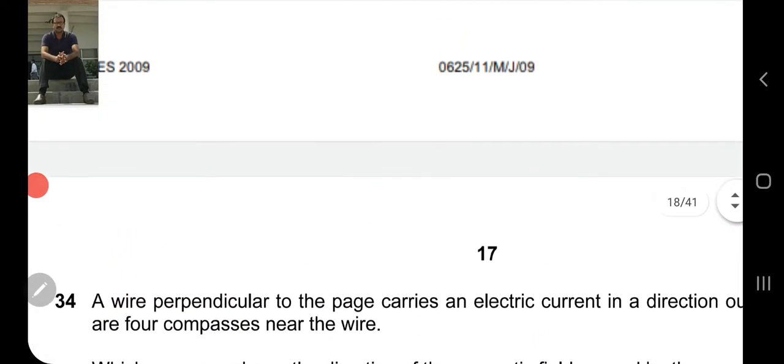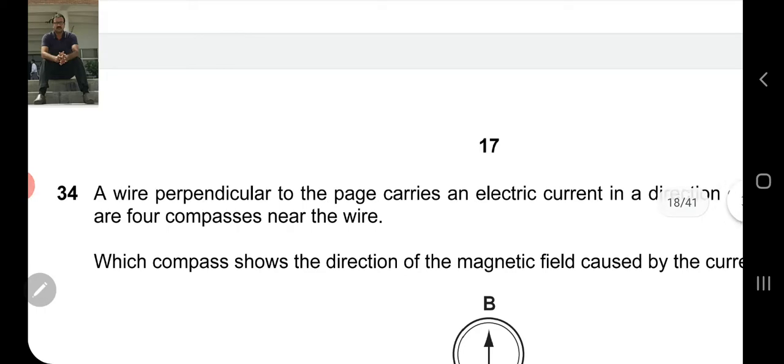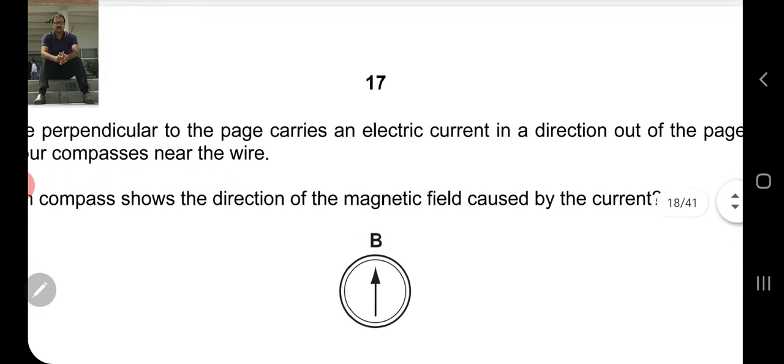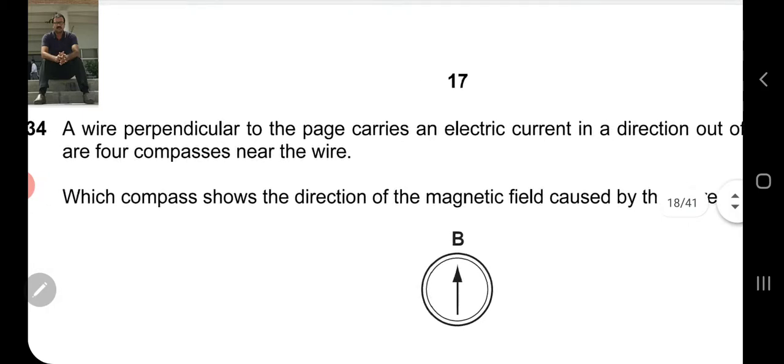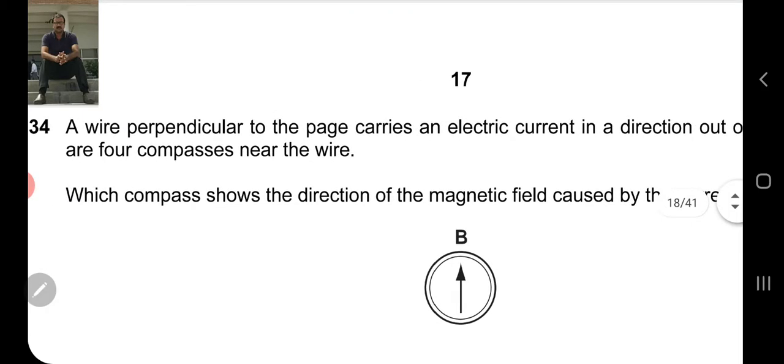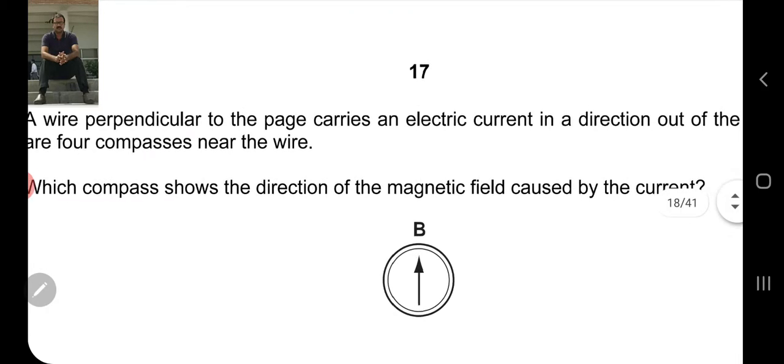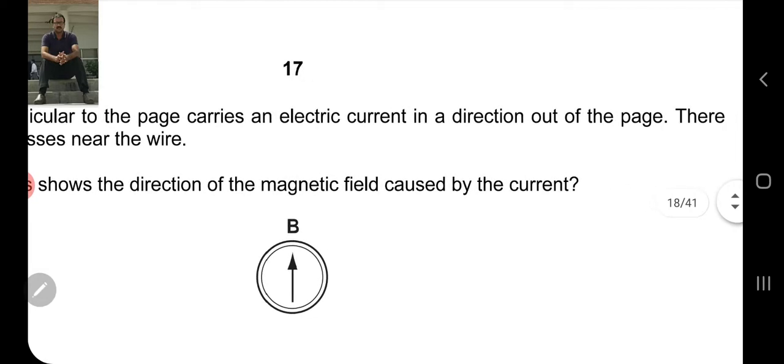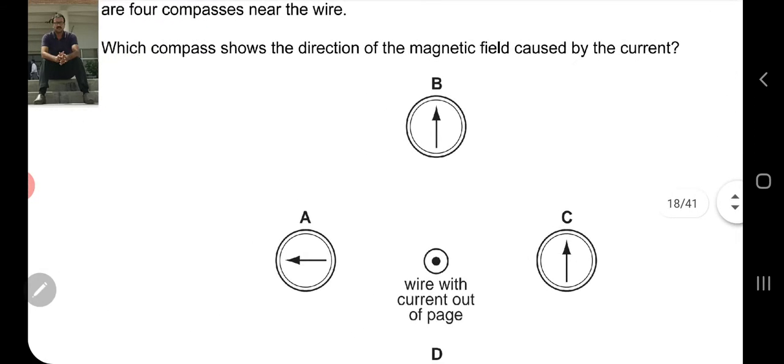Next MCQ, number 34. A wire perpendicular to the page carries an electric current in a direction out of the page. There are four compasses near the wire. Which compass shows the direction of the magnetic field caused by the current? You have to remember the right hand rule will apply here, the right hand grip rule. I've shared the right hand grip rule with you before, and I'll tell you again.